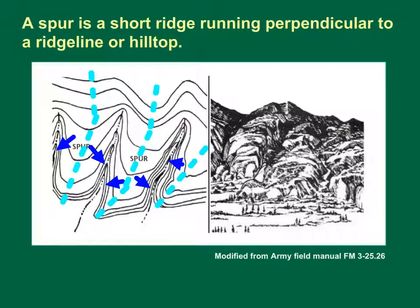A spur is a short ridge line running perpendicular to a ridge line or hilltop. Three spurs are shown in the map view on the left and the landscape view on the right. The ground slopes downward in three directions and upward in one direction on a spur. On a map, the contour lines representing a spur are U-shaped pointing away from higher ground.